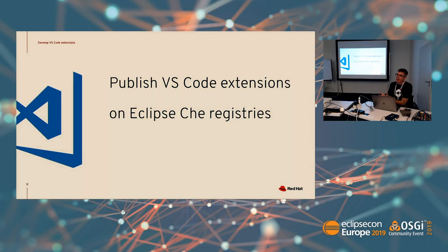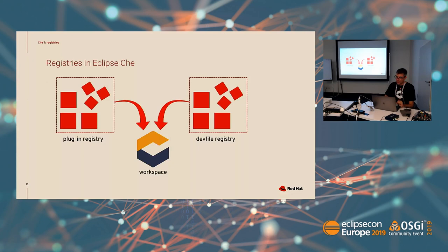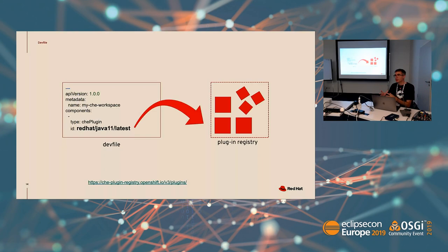My VS Code extension is working locally and I want to publish my extension to be used by others. Again, the concept of registries: I have my dev file registry and the plugin registry. The focus here to publish is that we need to publish to the plugin registry.